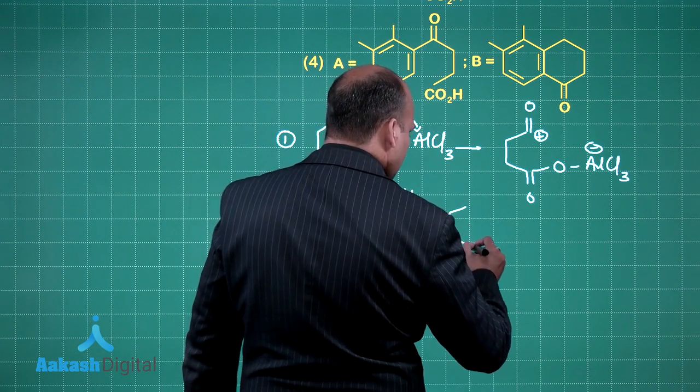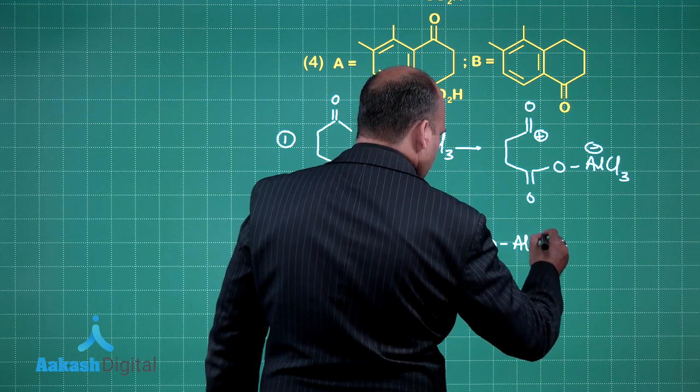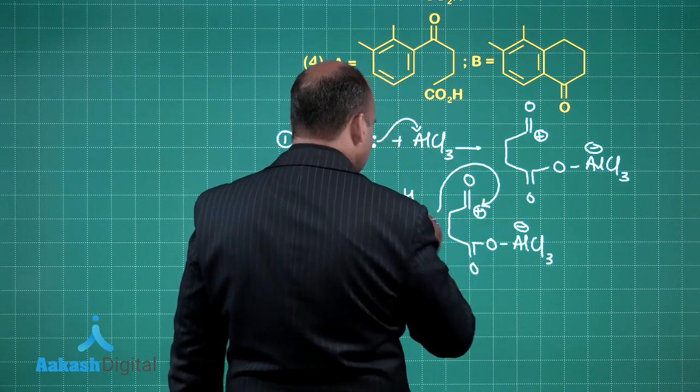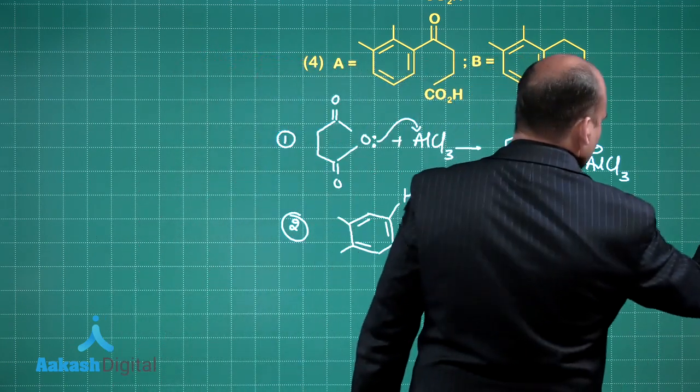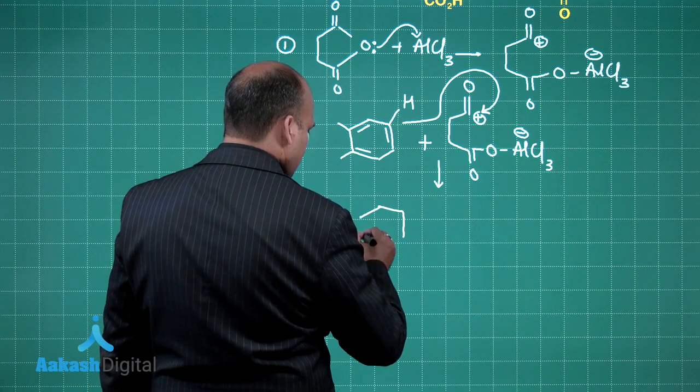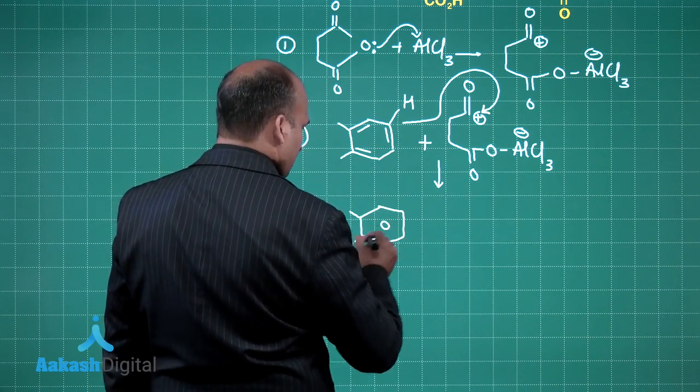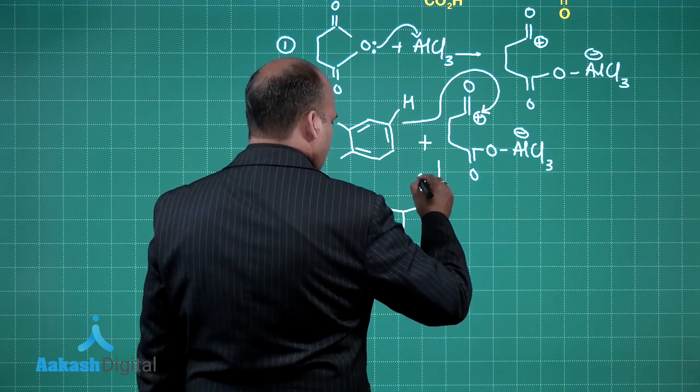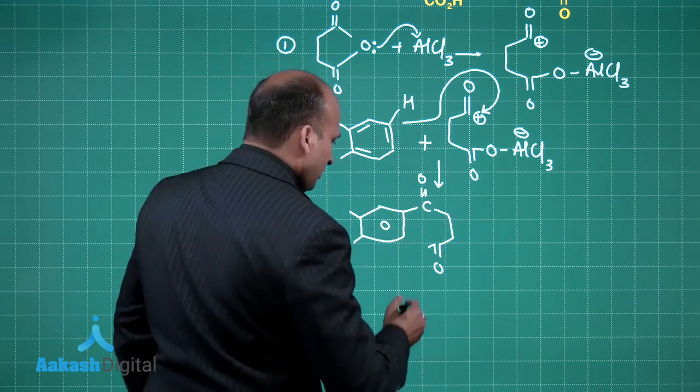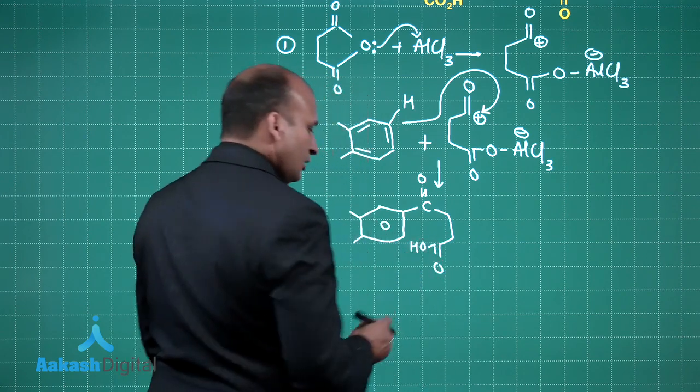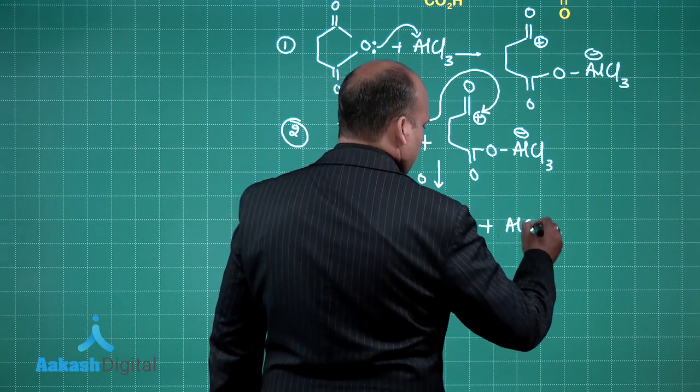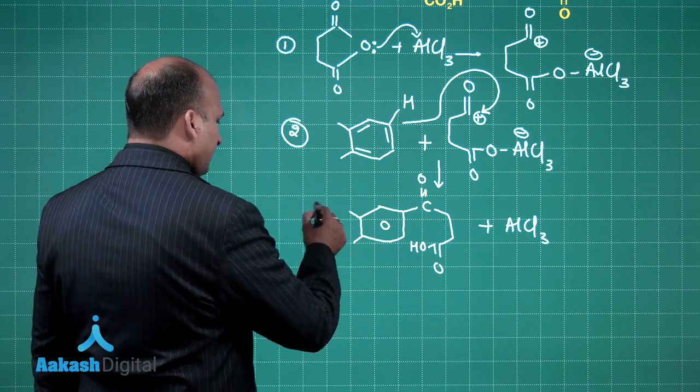So this positive charge attacks over here. So what is it that we are going to get? We will be getting... and as this H is attacking to this O, you are going to get a carboxylic group over here that is COOH and AlCl3 you have obtained. So this is your product A.